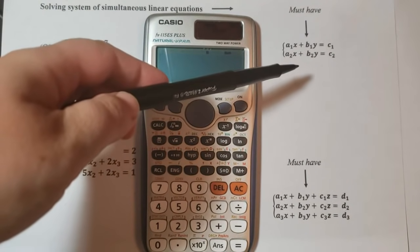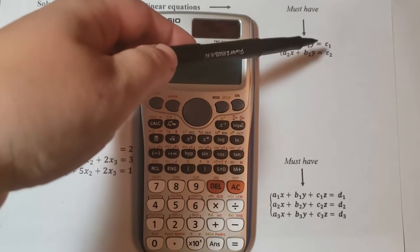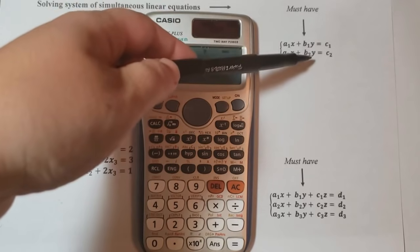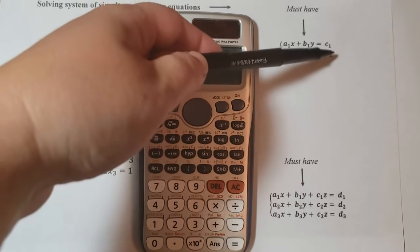That means we line out the x variables first and then y variables second. The numbers are on the right side of the equal sign.